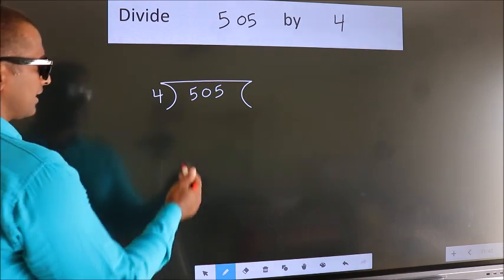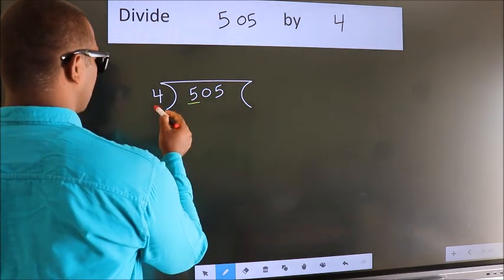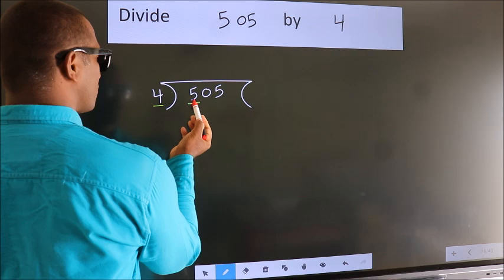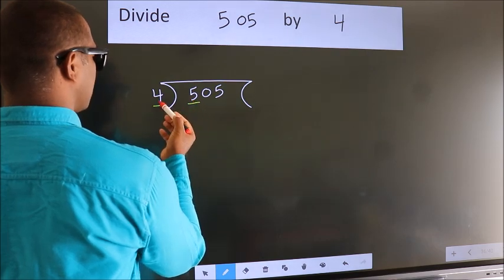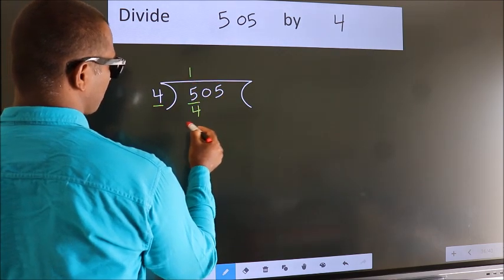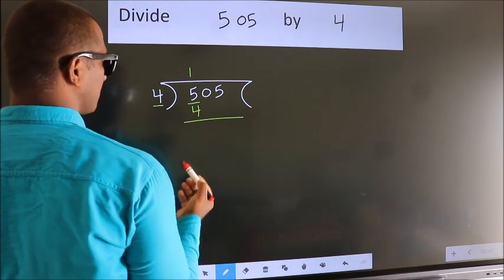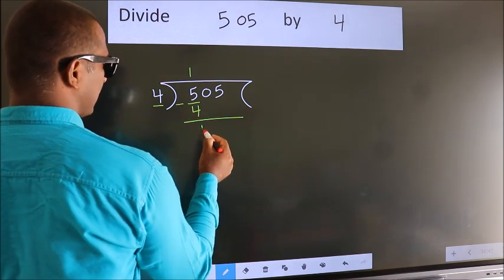Next, here we have 5, here 4. A number close to 5 in the 4 table is 4 ones, which is 4. Now we subtract and we get 1.